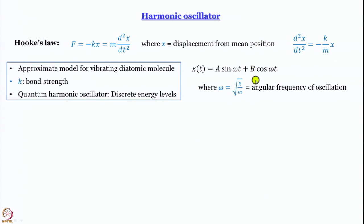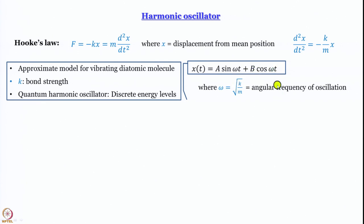Here ω = √(k/m), which is the angular frequency of oscillation. To verify this is a valid solution, we differentiate it twice. The first derivative dx/dt = ω(A·cos(ωt) - B·sin(ωt)). Since we are talking about eigenvalue equations, it is obvious that this is not an eigenvalue equation, so this function is not an eigenfunction of the first derivative operator.